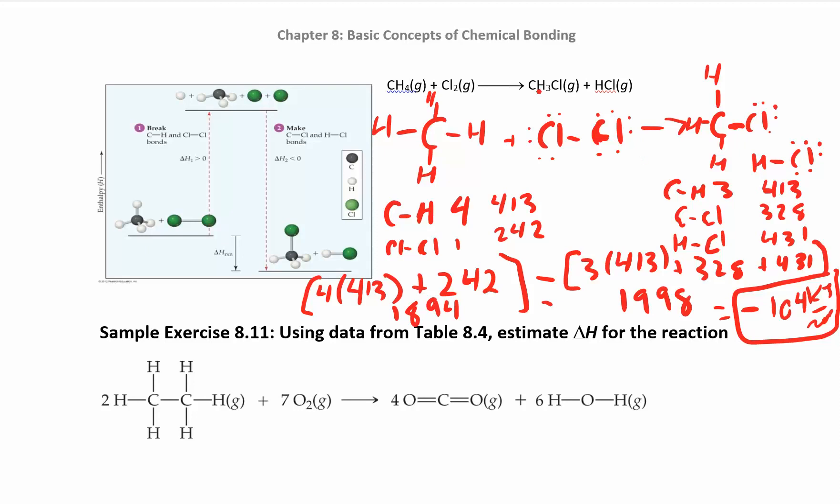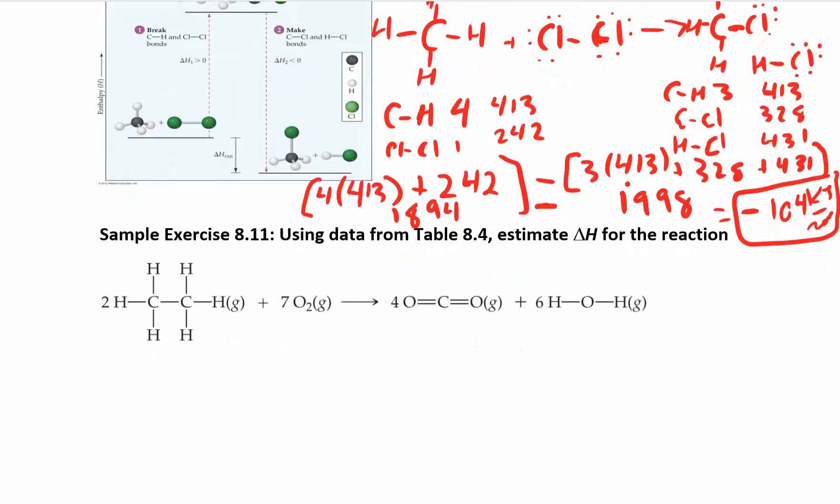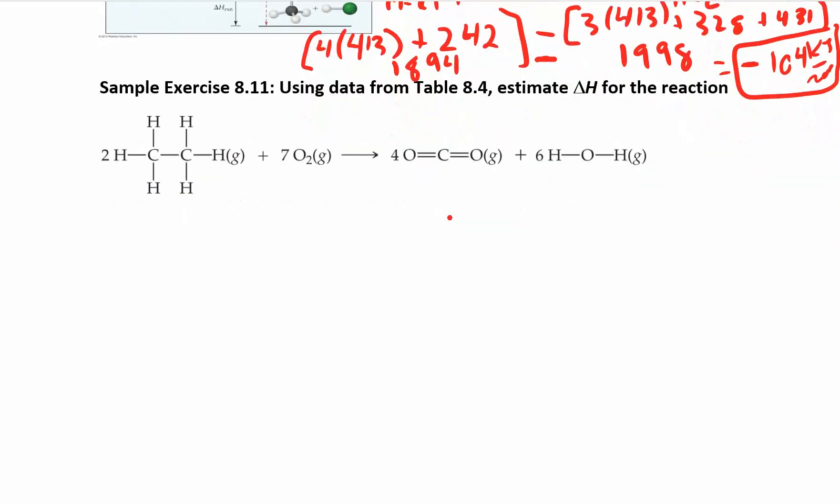That's in kilojoules per mole. They tell you the units in the table up there. That's our final answer. That is obviously exothermic. The amount of energy in the reactants is 1894. The amount of energy in the products is 1998, so we are releasing energy when that happens.